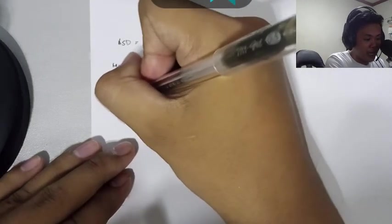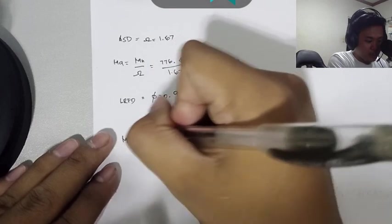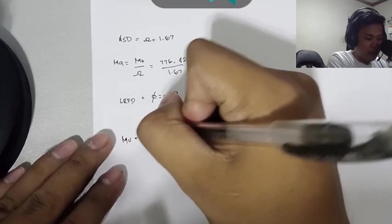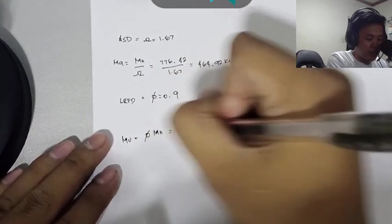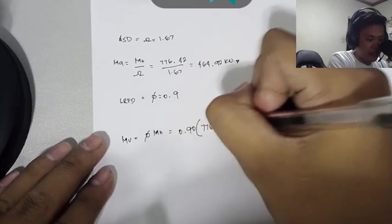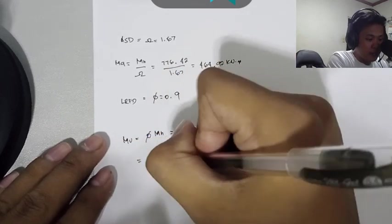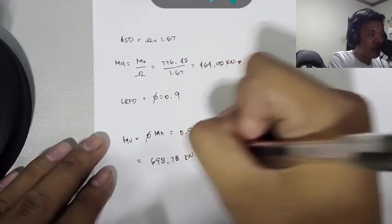Next is for LRFD. It has a factor of safety of 0.9. MU equals the factor of safety multiplied by MN, equal to 0.90 multiplied by 776.42. We get a value of 698.78 kilonewton-meter.